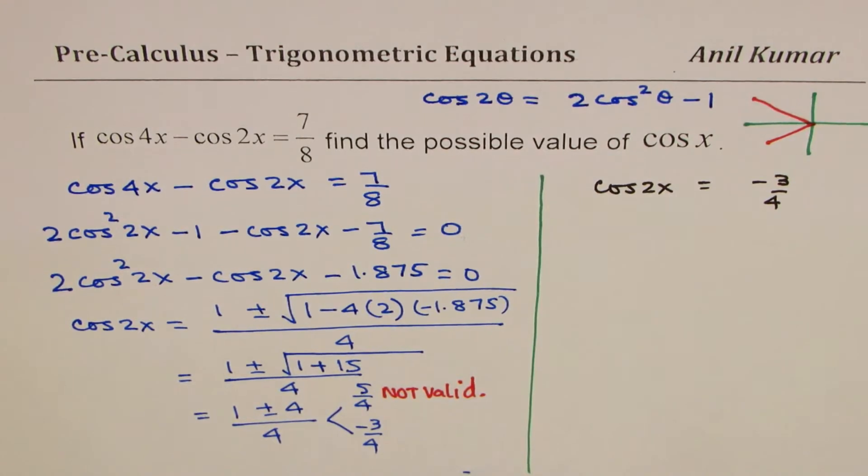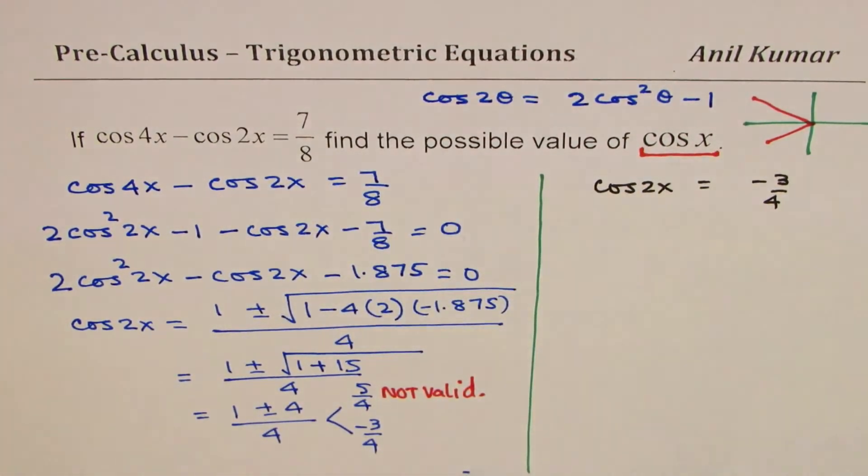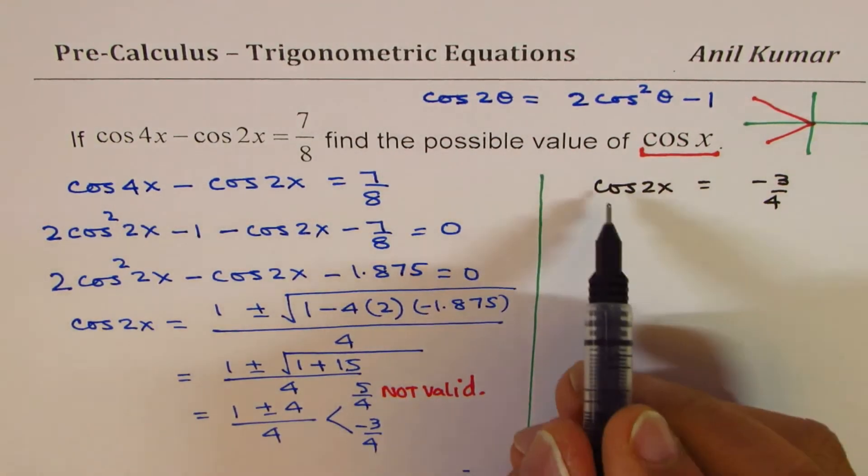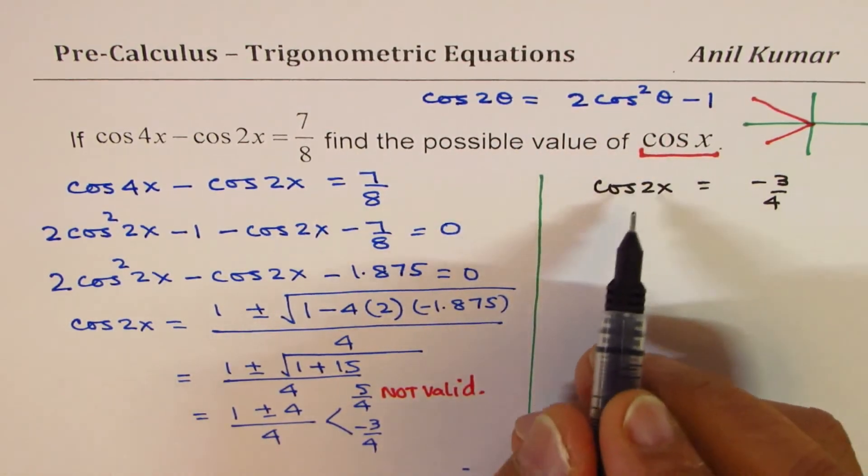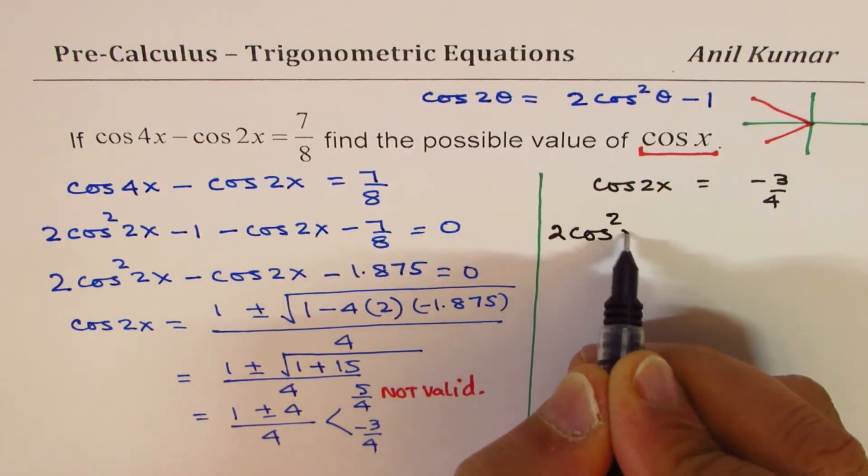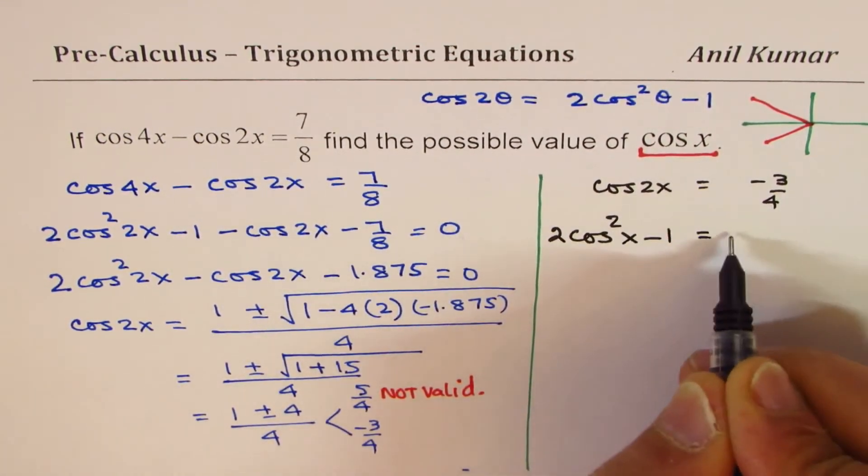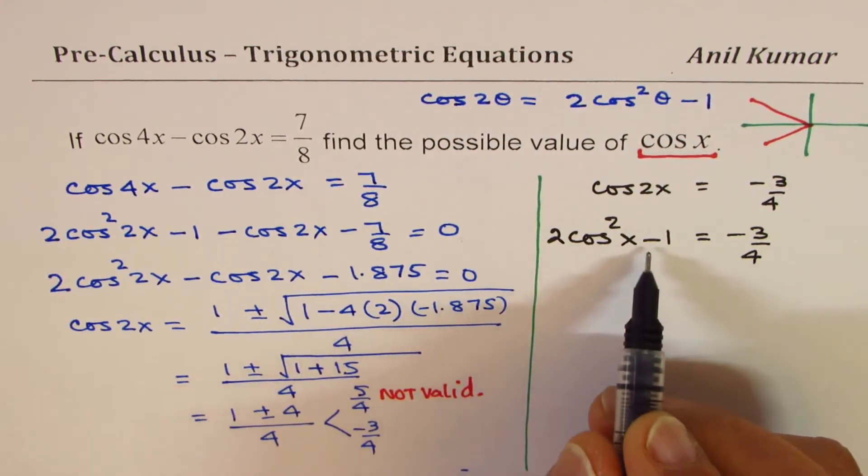We have to only find the value of cos x, we don't have to find angles. Cos 2x can be written as 2 cos² x minus 1. Let's rewrite this as 2 cos² x minus 1 equals minus 3 over 4. Let's solve for cos x now.